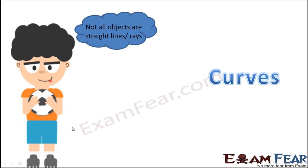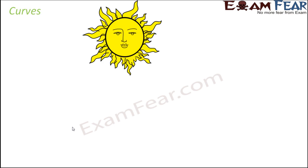One most common thing that you can think of is a ball. So when you look at a ball, do you think it is made up of lines or line segments or rays for that matter? No, because it's not at all straight from anywhere. So it's curved. So now let's discuss in detail about curves. So what exactly is a curve? Let's look at these shapes and then come to a conclusion about what curves could be.